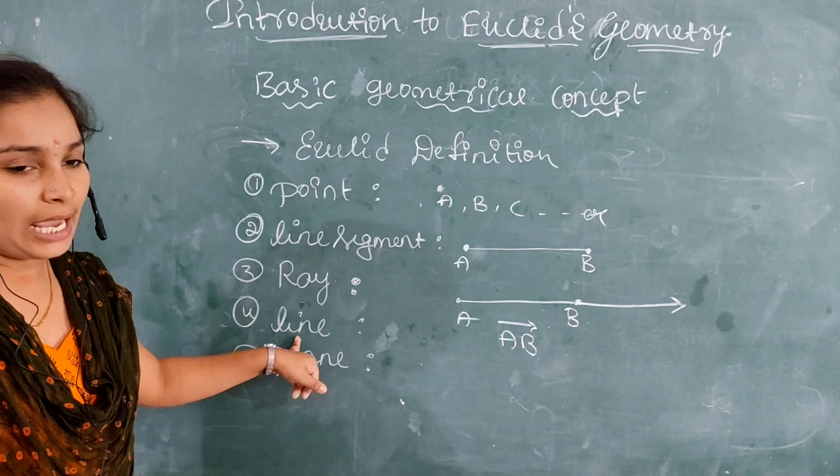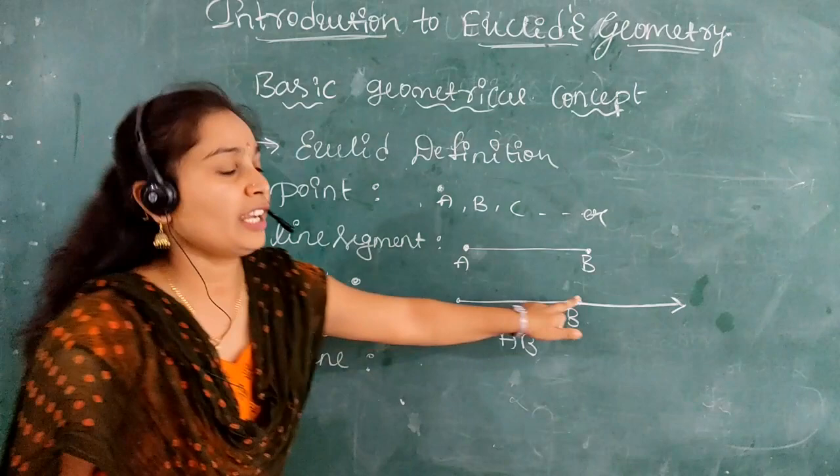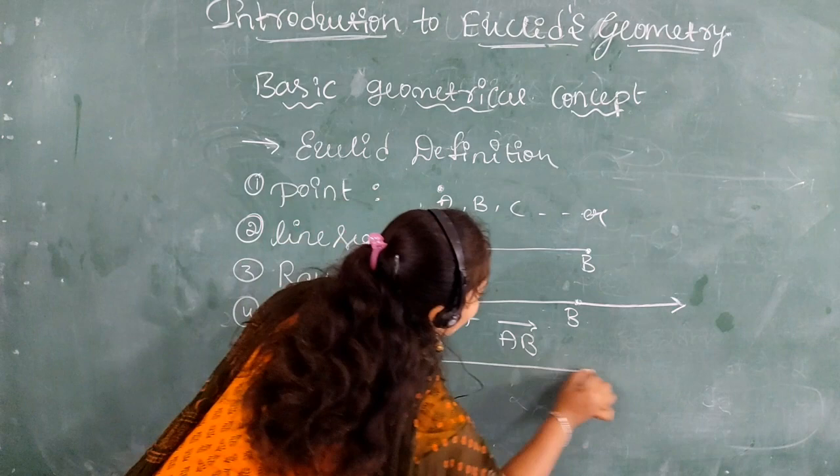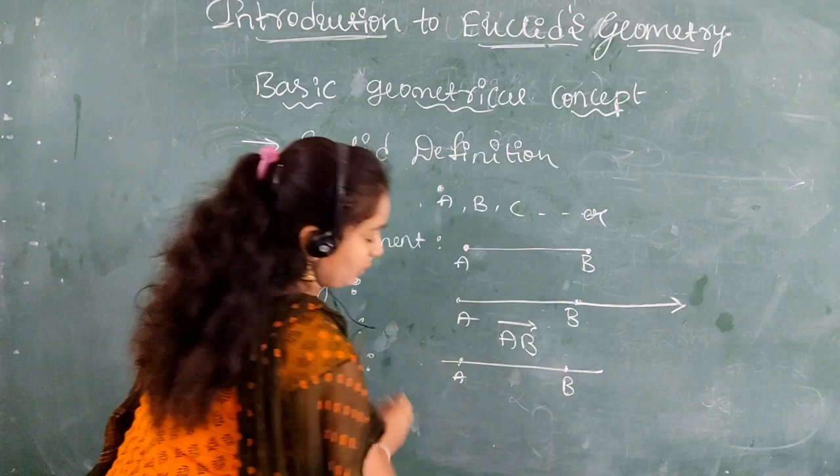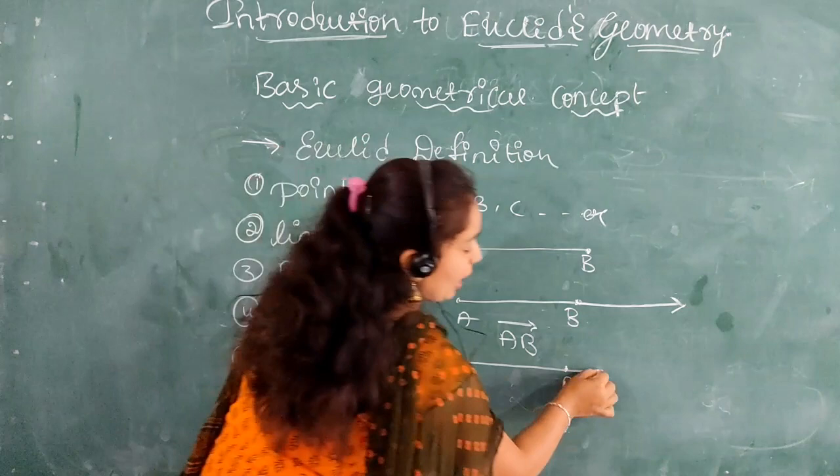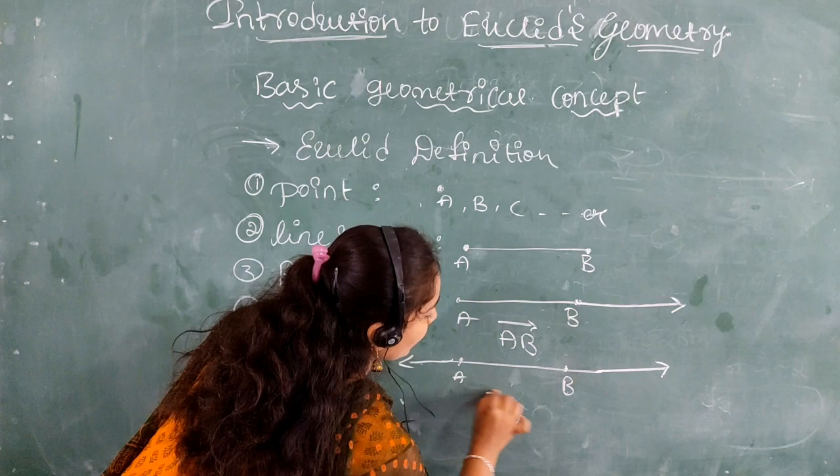The next one is line. A line is similar to a ray, but here both ends are extended indefinitely. A line is a line segment AB where both ends extend indefinitely, and we denote it as AB with a double arrow.